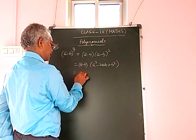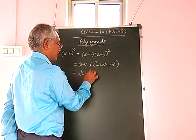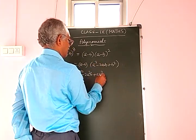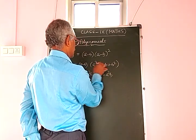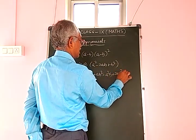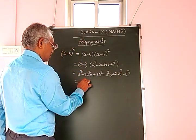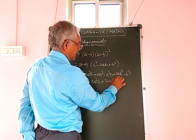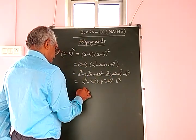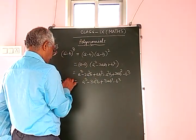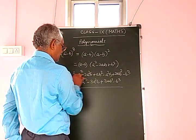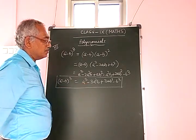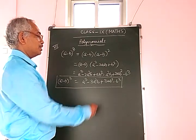On multiplying, we get A³ - 3A²B + 3AB² - B³. This is the formula: (A - B)³ = A³ - 3A²B + 3AB² - B³.